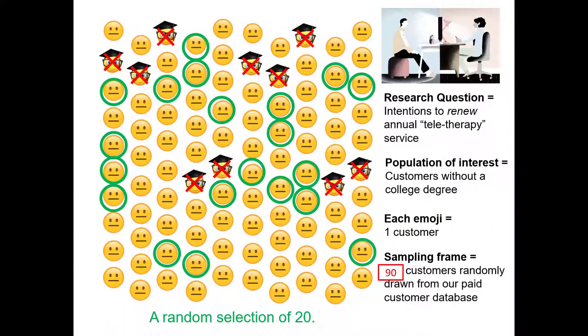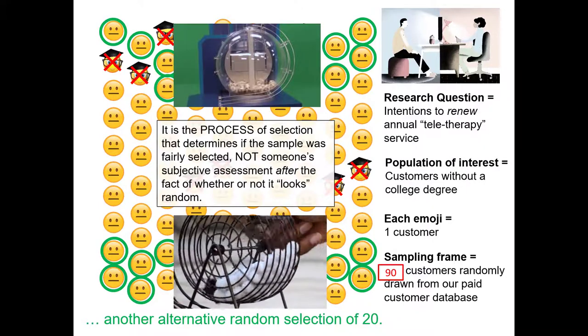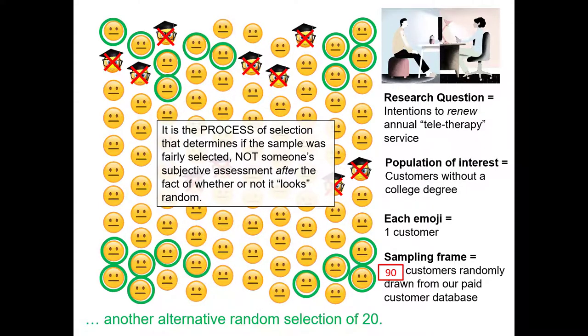This could represent a random subset of 20 individuals being selected. Here's an alternative random selection. And here's another alternative random selection. But does this selection of 20 individuals look random to you? Actually, it's a bit of a trick question. It's the process of selection that determines if the sample was fairly randomly selected, not someone's subjective assessment after the fact of whether or not it looks random. So even though all of our selections are bunched around the four corners, that really doesn't tell us whether it was random or non-random sampling.